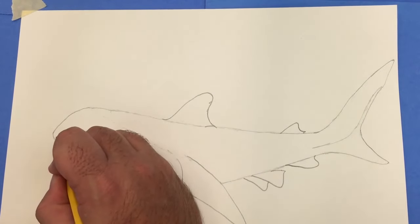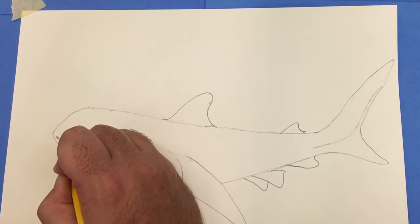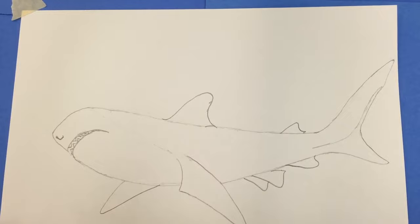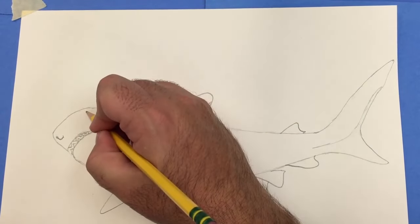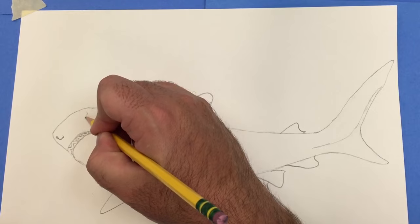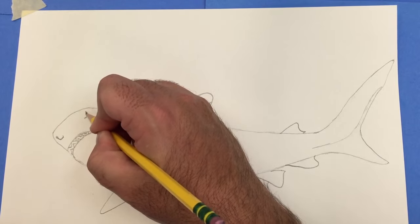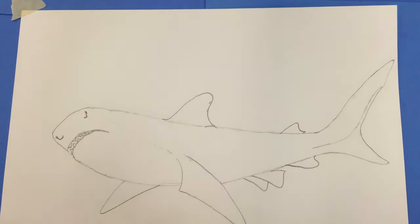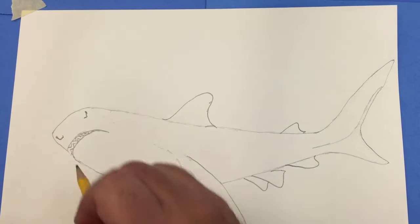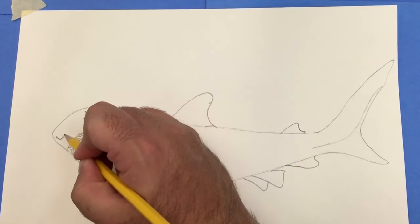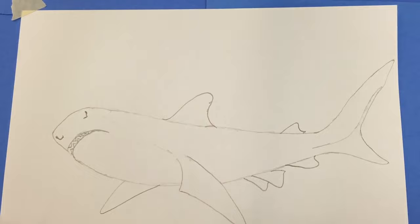Next I'm going to add the nostrils underneath. Sharks have a really good sense of smell. And with the tiger shark, there's also a little flap of skin near each nostril to help it detect its prey when it's swimming close to the bottom.